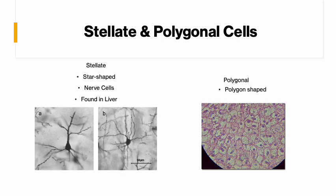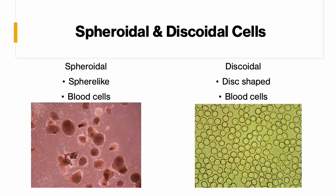Stellate cells are the ones that look like stars — or like some alien creature with a bunch of limbs. These are normally nerve cells, and when we talk about the nervous system you'll see what that means. They can also be found in the liver. Polygonal cells are polygon-shaped and found in many places in the body. The round ones — spheroidal and discoidal — are usually blood cells, and they're clearly going to be either round or disc-shaped.